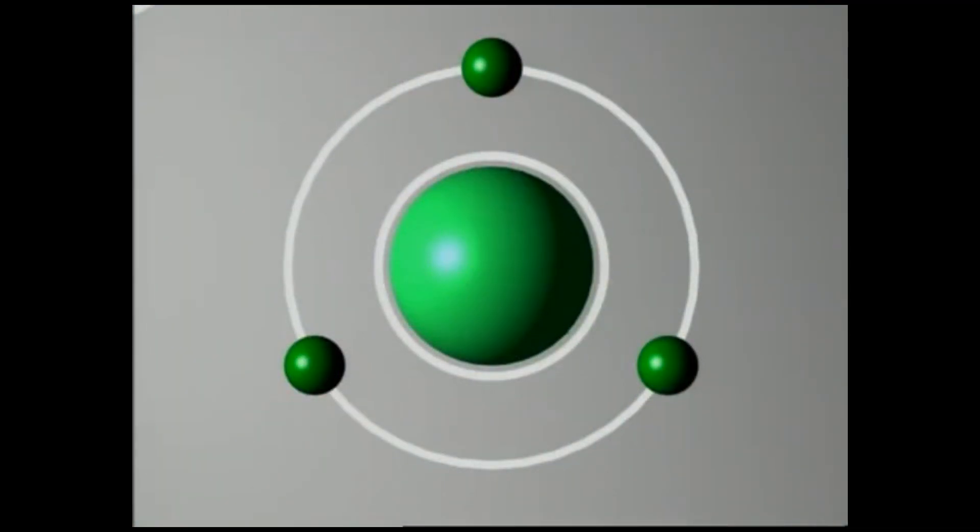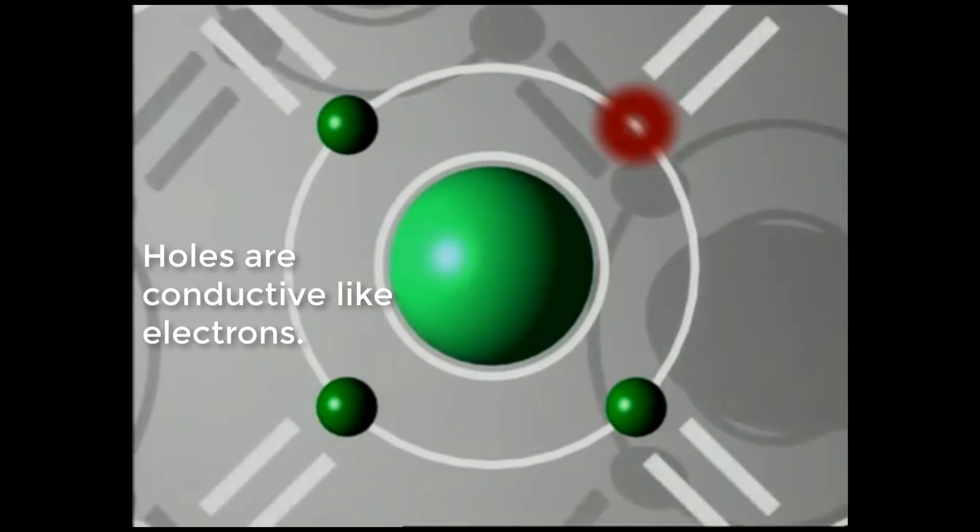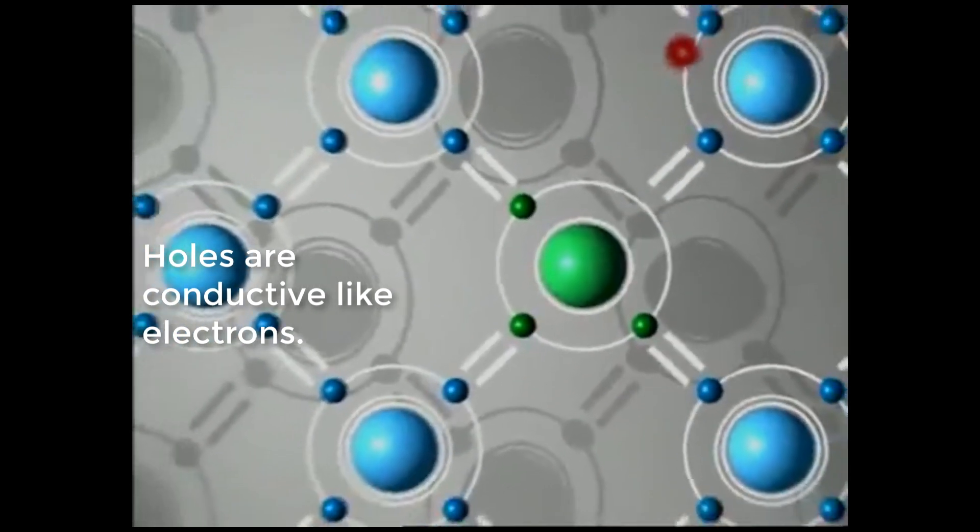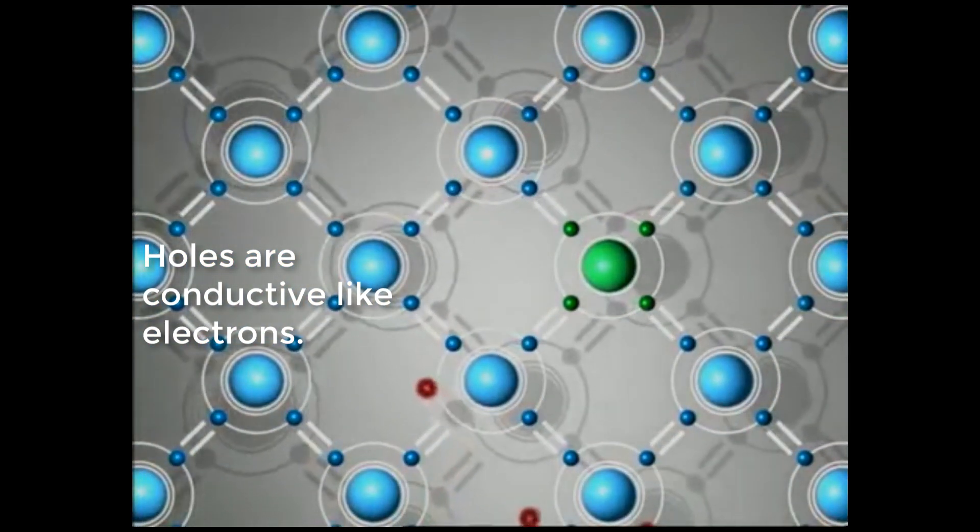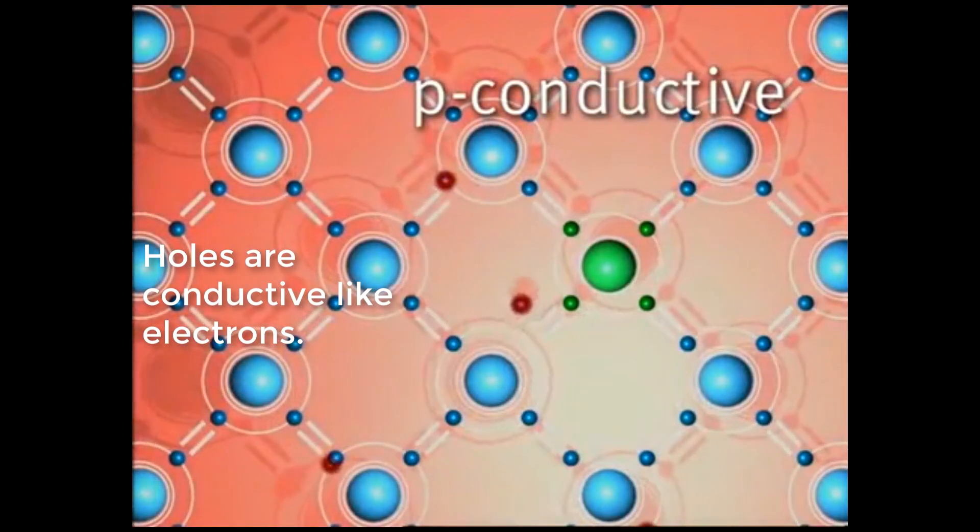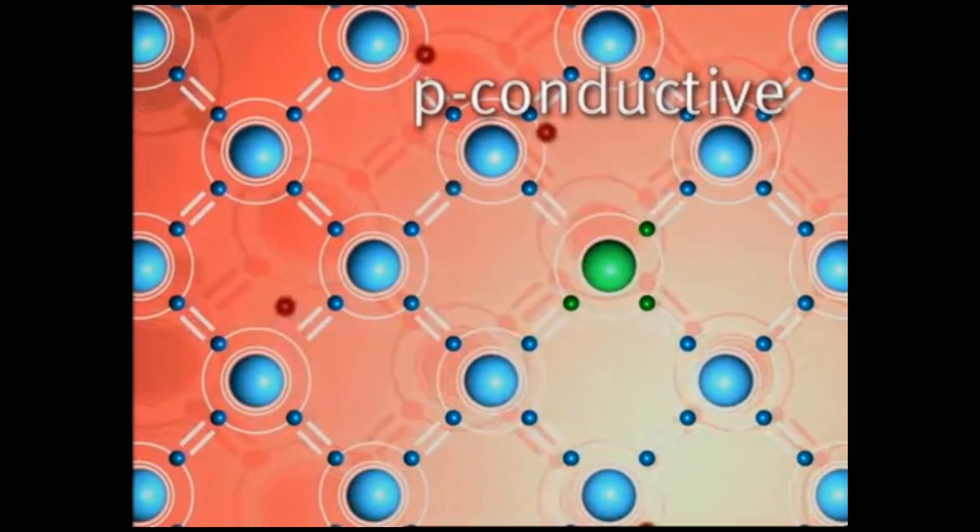Boron atoms, on the other hand, have only three outer electrons. When they are built into the silicon lattice, one silicon electron is missing. This creates electron holes. They move through the crystal like positively charged particles. The material is positively charged, or P-conductive.